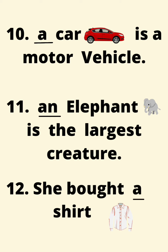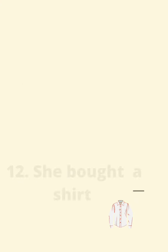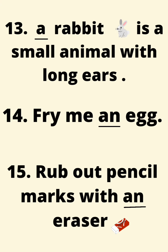A car is a motor vehicle. An elephant is the largest creature. She bought a shirt. A rabbit is a small animal with long ears. Fry me an egg. Rub out pencil marks with an eraser.